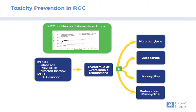We're working with breast cancer colleagues on a concept randomizing patients in a two-by-two design to either no prophylaxis, budesonide (an oral corticosteroid), minocycline (an oral tetracycline), or the combination. The primary endpoint is the incidence of stomatitis at two months, based on data from Dr. Porta's piece showing that the bulk of these toxicities occur within a two- to three-month span.